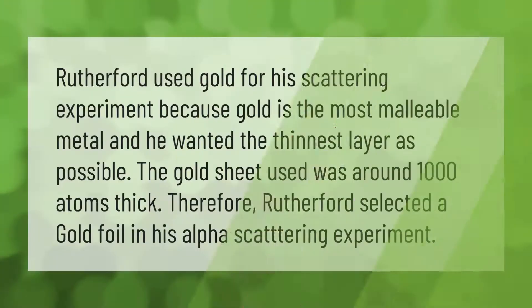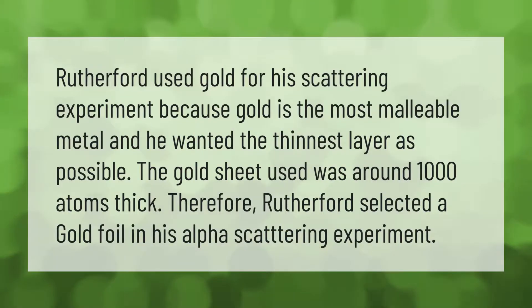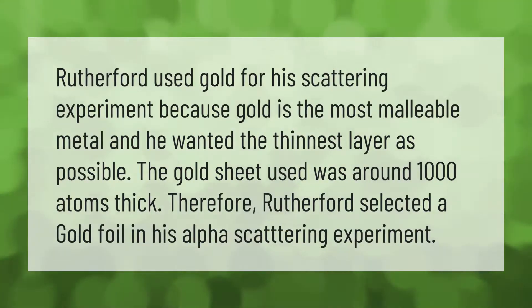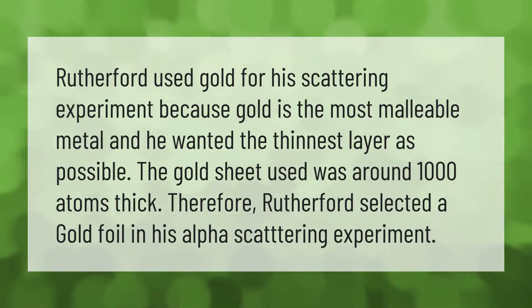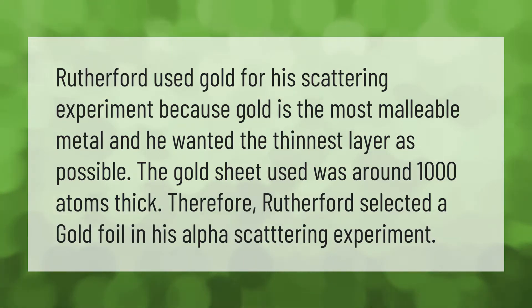Rutherford used gold for his scattering experiment because gold is the most malleable metal, and he wanted the thinnest layer possible. The gold sheet used was around 1,000 atoms thick. Therefore, Rutherford selected gold foil in his alpha scattering experiment.